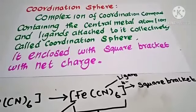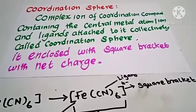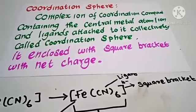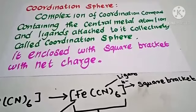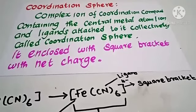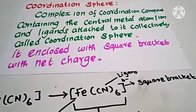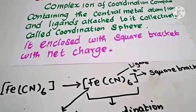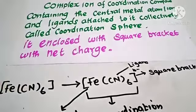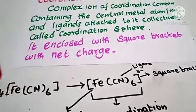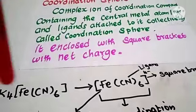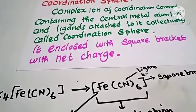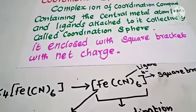Next, we are going to discuss the coordination sphere. The complex ion of the coordination compound containing the central metal atom or ion and the ligands attached to it is collectively called the coordination sphere. It is enclosed in the square bracket with the net charge. For example, in K4Fe(CN)6, potassium ferrocyanide, the part in square brackets is the coordination sphere.